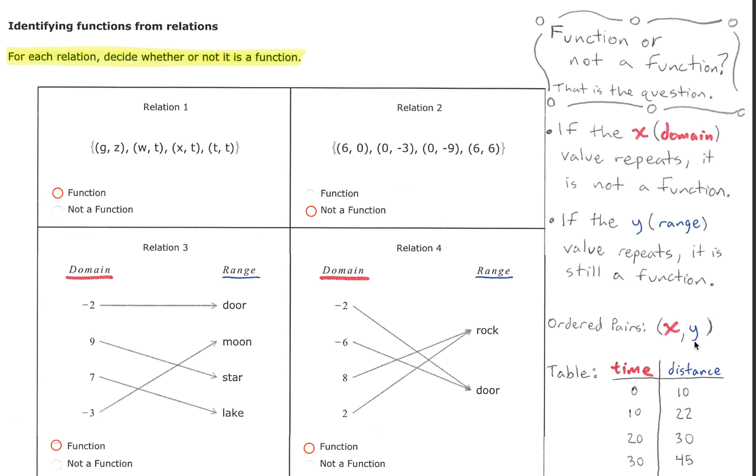So for example if we were taking a look at a table given time and distance, time represents the x which represents the domain, distance represents the y which represents the range. At time 0 the distance is 10, at time 10 the distance is 22 and so forth.